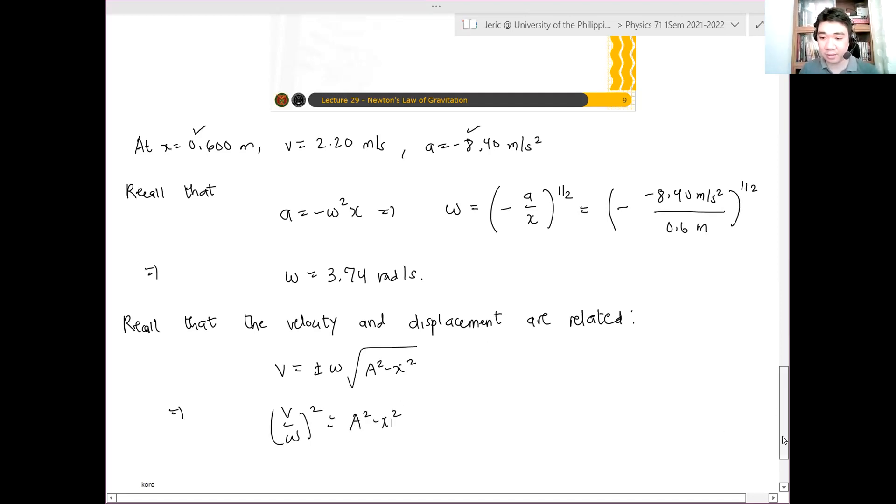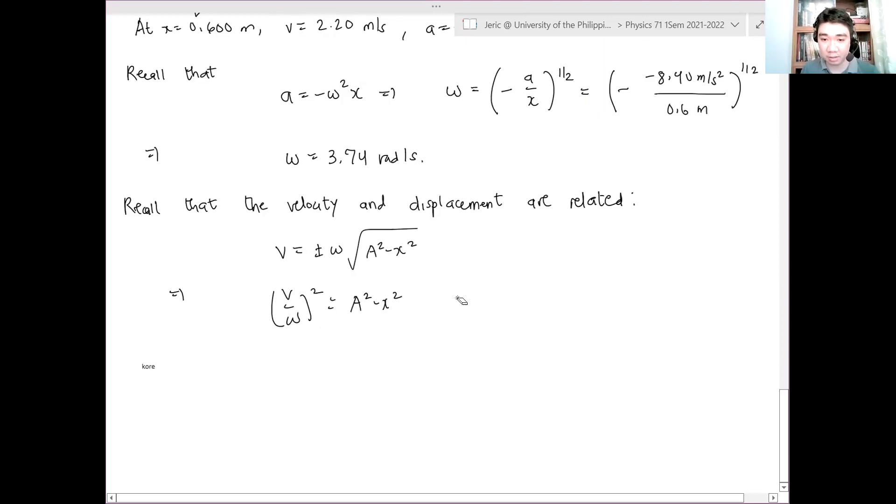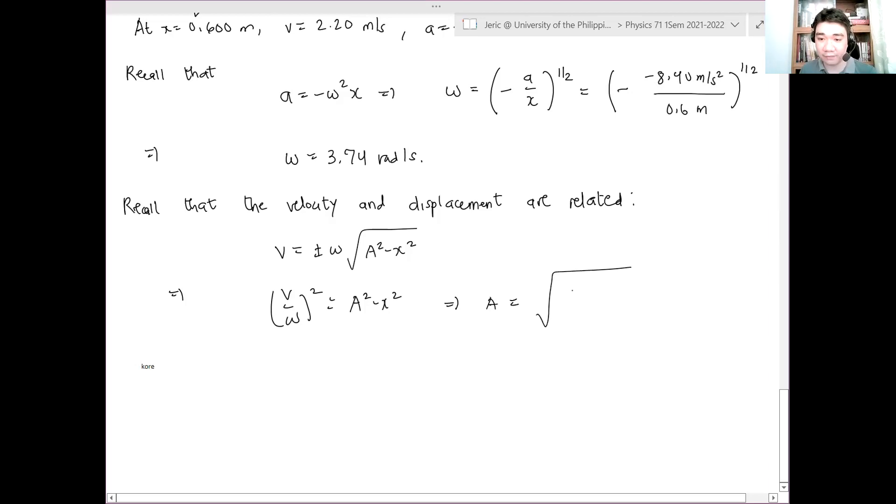In fact, we can show that this is V over omega quantity squared equals a squared minus x squared. And thus, one can show that a is equal to square root of x squared plus V over omega quantity squared.